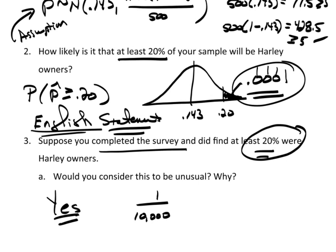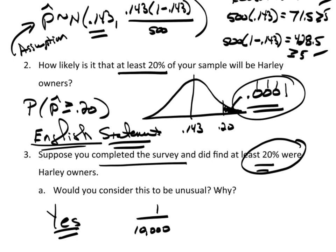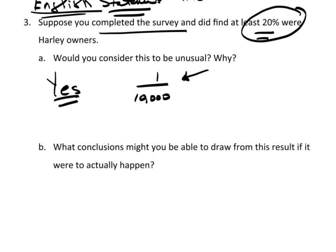Now, suppose you actually completed the survey and you did find at least 20% Harley owners — say 21%. Would you consider this unusual? The answer is yes, because this probability means it could have only happened once in every 10,000 randomly taken samples from this population, making it extremely, extremely unlikely to have happened.